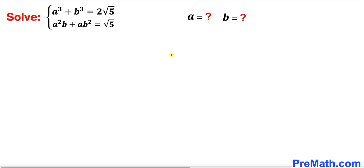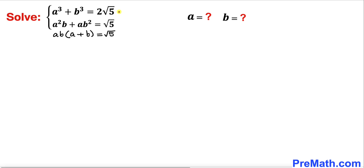Let's get started with the solution. Let's focus on the second equation. We can see that ab is in common, so therefore we can factor out ab and we are left with a + b = √5 on the right hand side. Let me call this the first equation as equation one and the factored form as equation two.